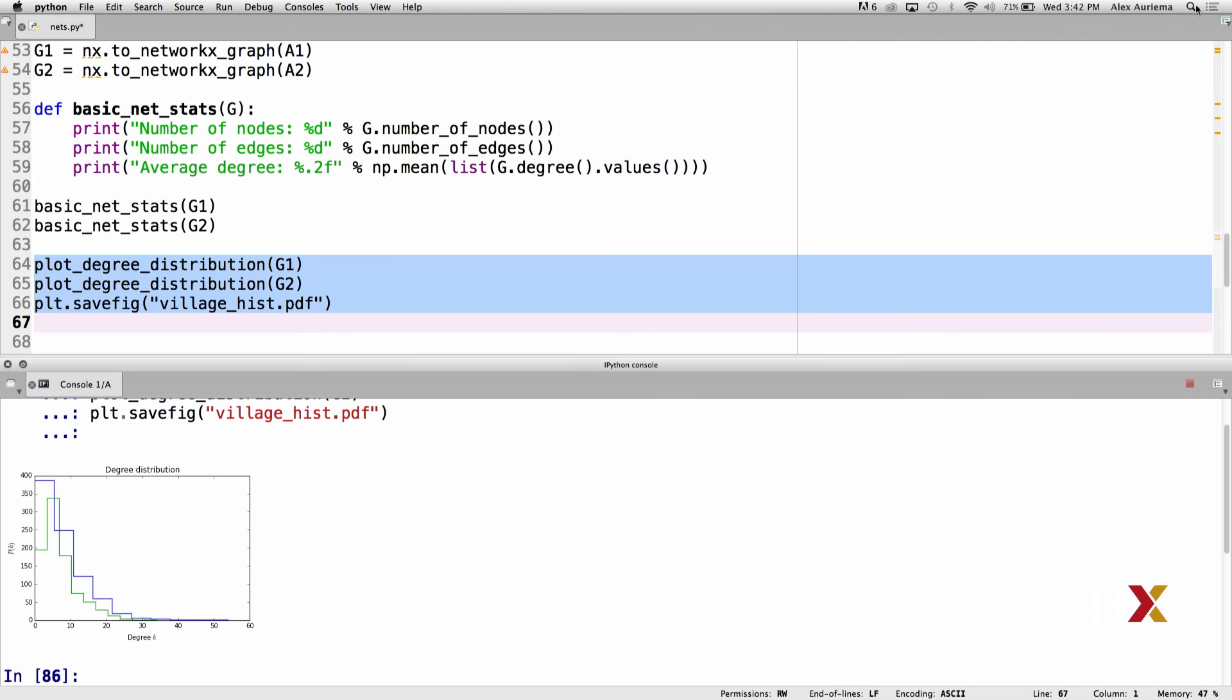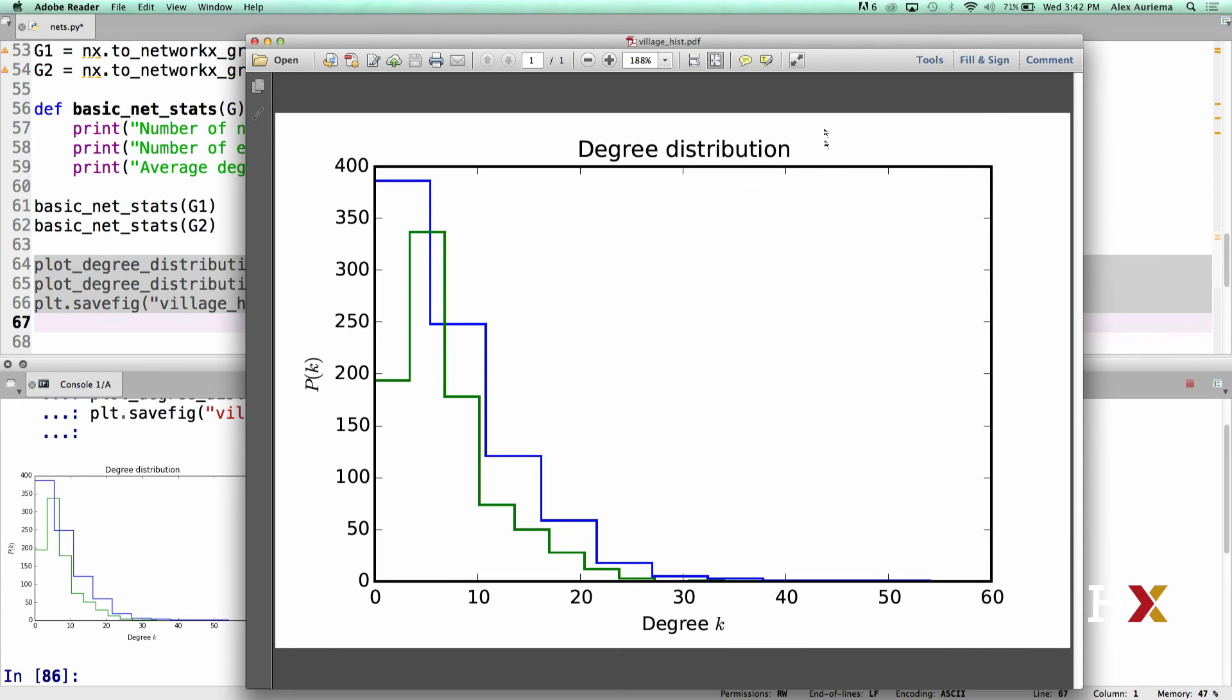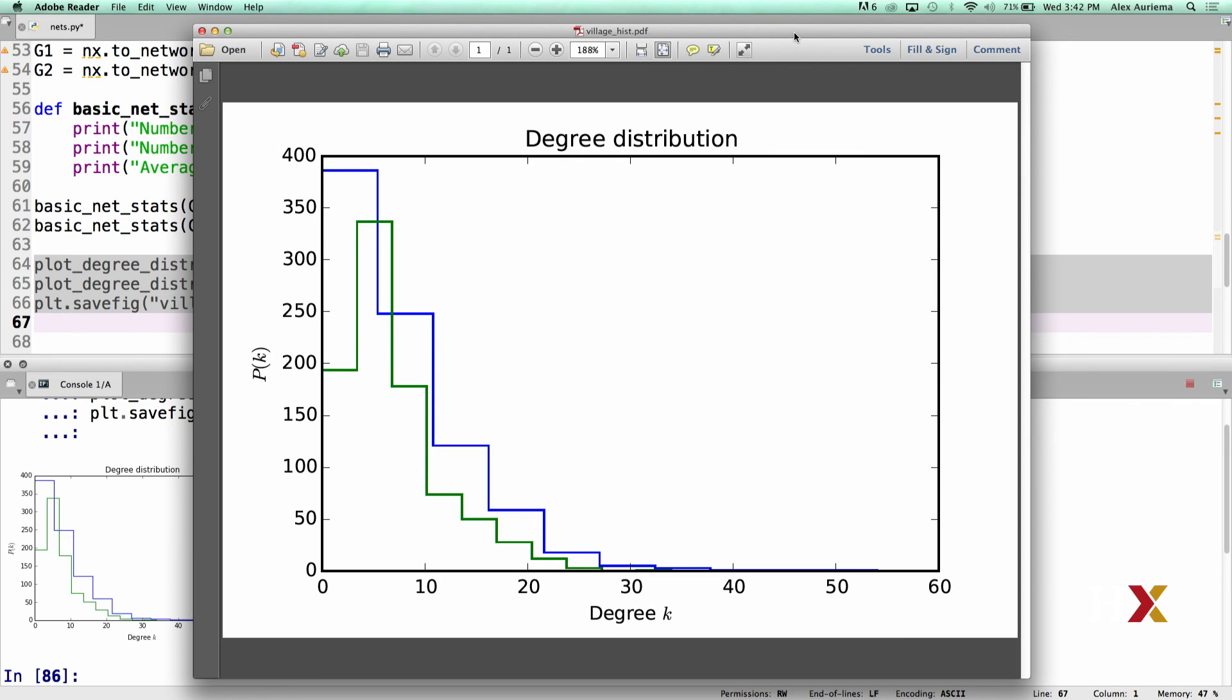We can try finding that plot here. And in this case, we have degree distributions from the two different villages shown here, one on top of the other.